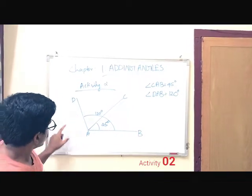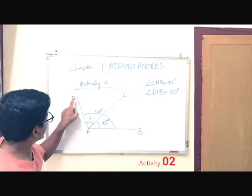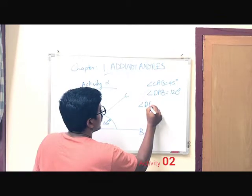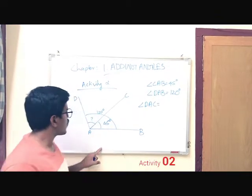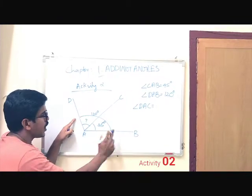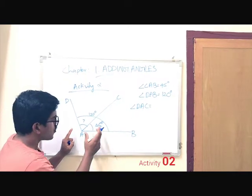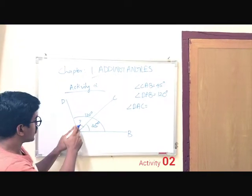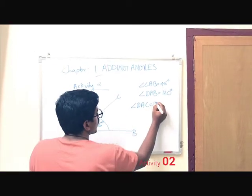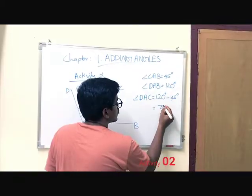One more question: what is the angle measurement of angle D, A, C? The entire angle is 120 degrees and this portion is 45 degrees. So we can subtract 45 from 120 to get the measurement of angle D, A, C. So angle D, A, C equals 120 degrees minus 45 degrees, which is 75 degrees.